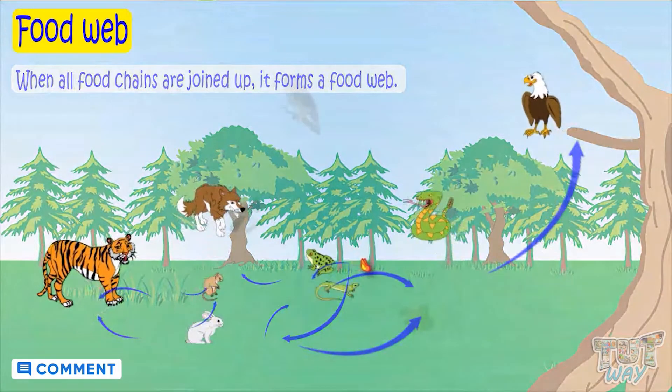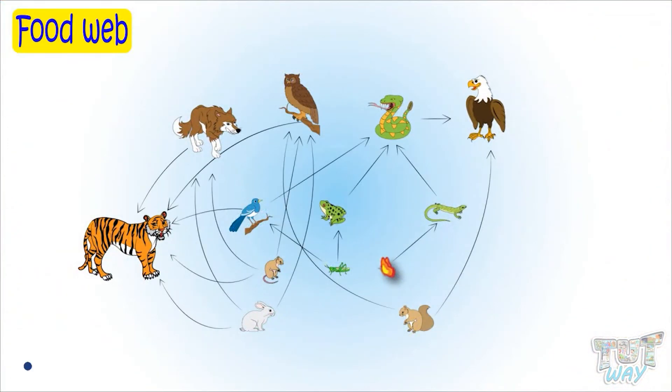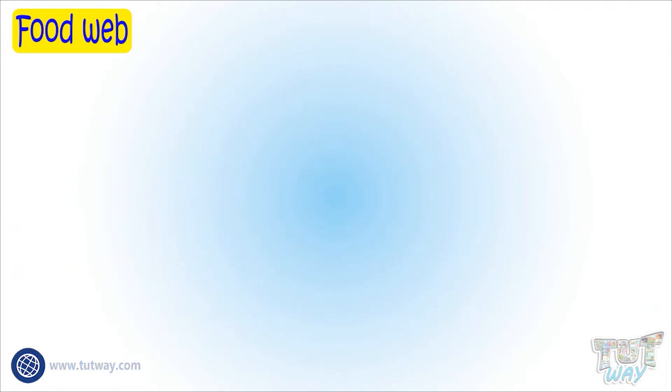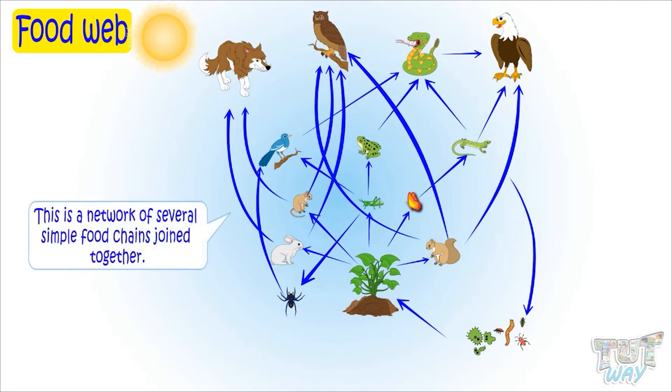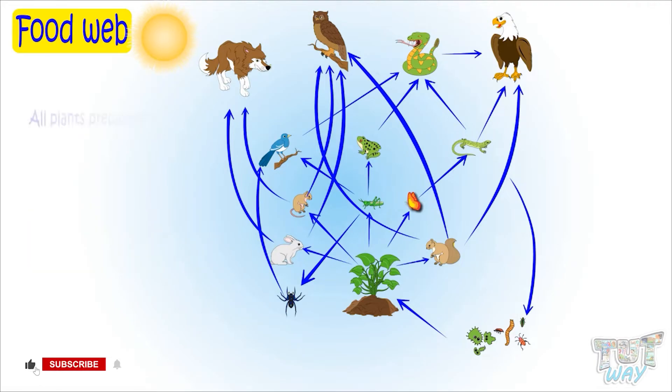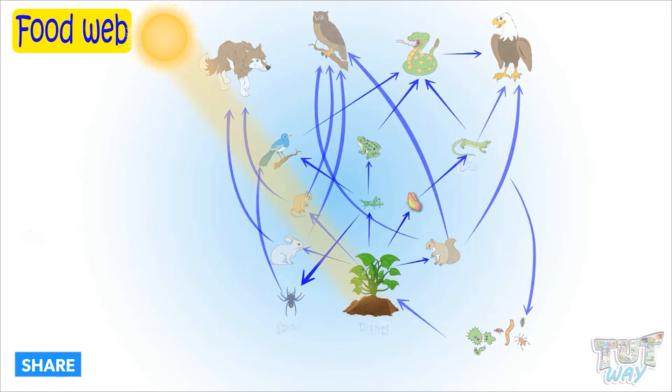Food web is much more complicated than a food chain. Now let's see examples of food web. Here we have a simple example of food web. Let's try to understand this food web. This is a network of several simple food chains joined together. First of all, plants prepare food using the energy from the sun.